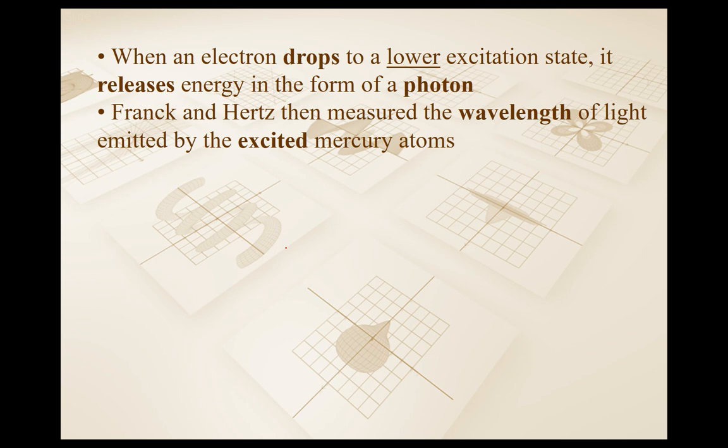So what Franck and Hertz did is they measured the wavelengths of all the photons being emitted by the excited mercury atoms. Let's modify our definition of excitation: when a gas gets excited, the electrons within the gas are going to these higher energy states, and unexcited means they're in the ground state.